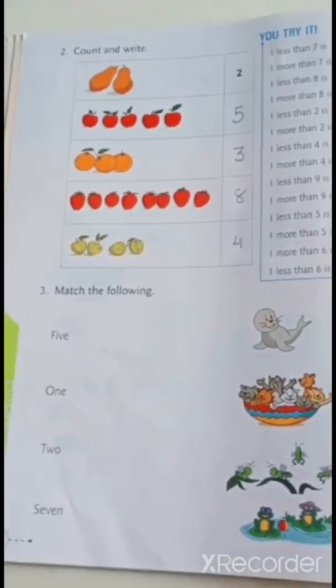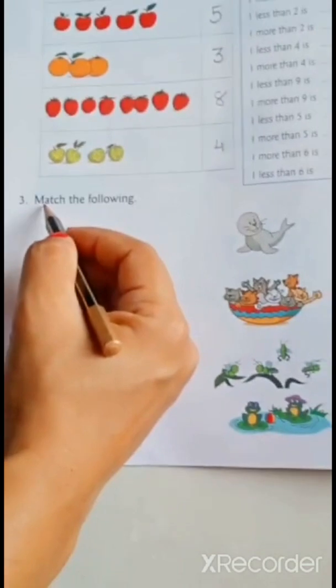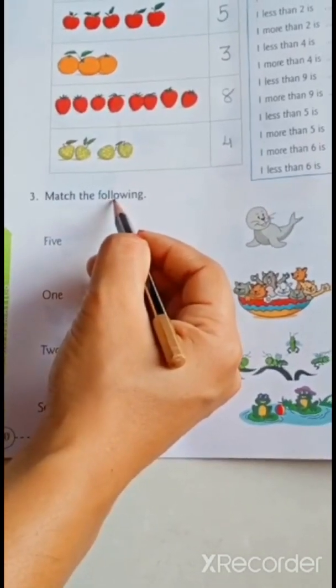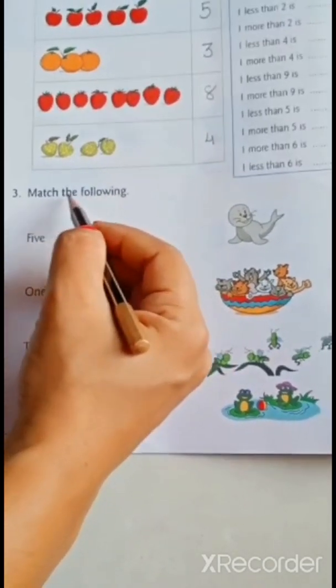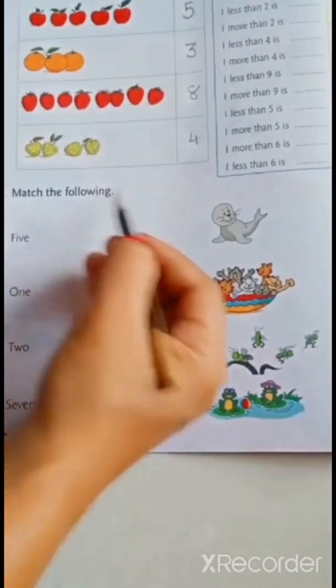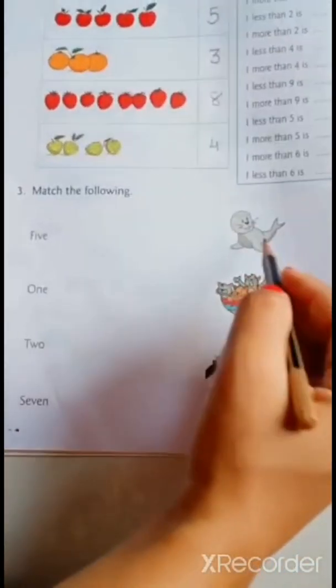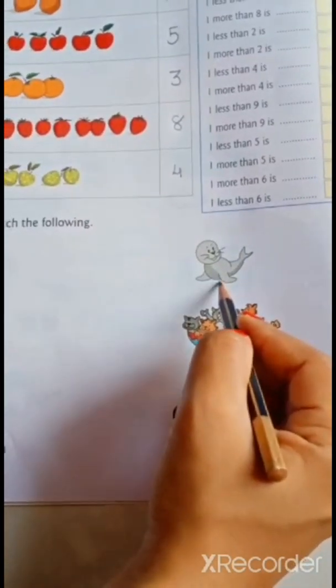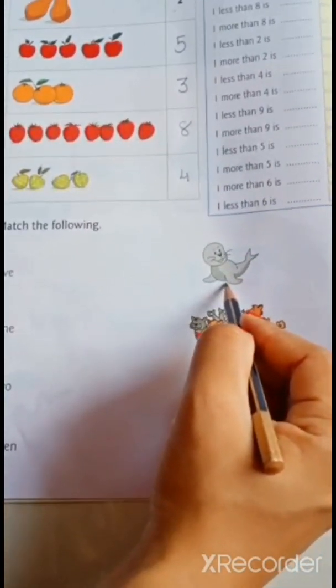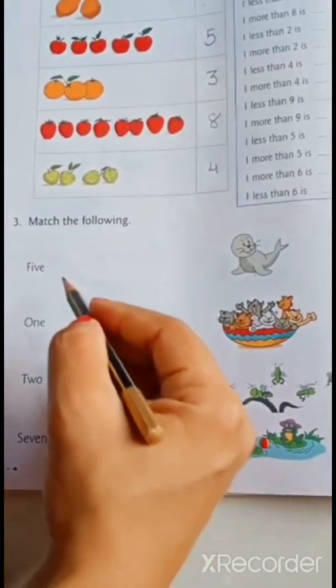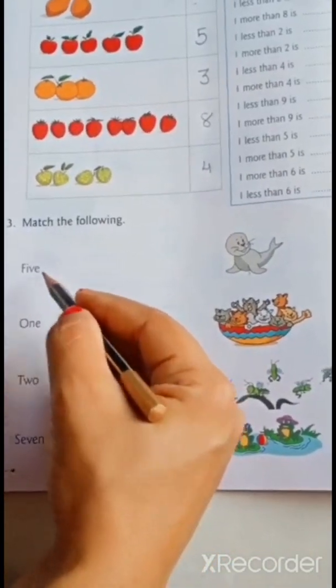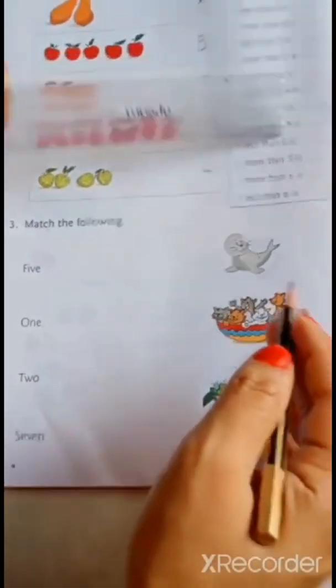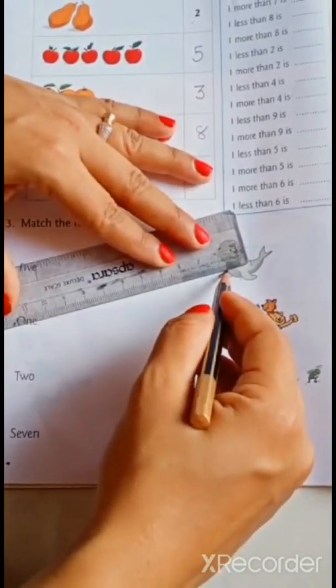Now, question number 3. M, A, T, C, H match. T, H, E, the. F, O, W, L, O, W, I, N, G. Match the following. Again matching. C. What is this? Seal. How many seal are here? Only 1. So, we will join with 1. Where is 1 written? Here. No. O, N, E, 1. O, N, E, 1 here. So, join O, N, E, 1 with this seal.